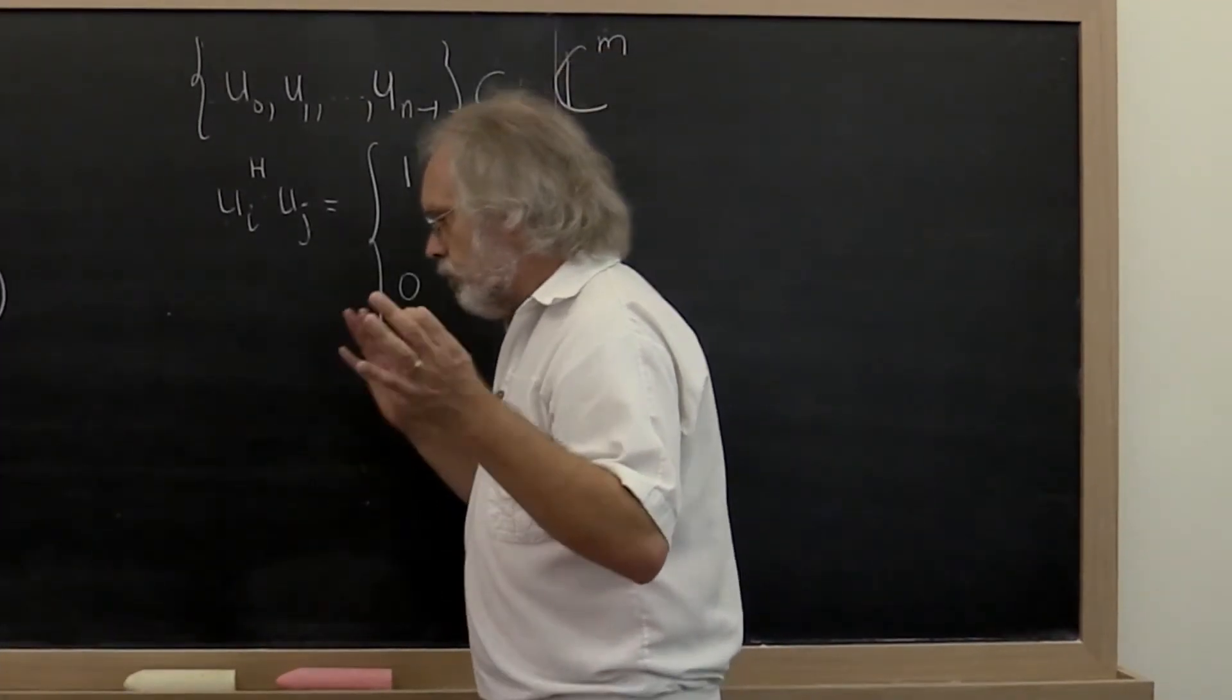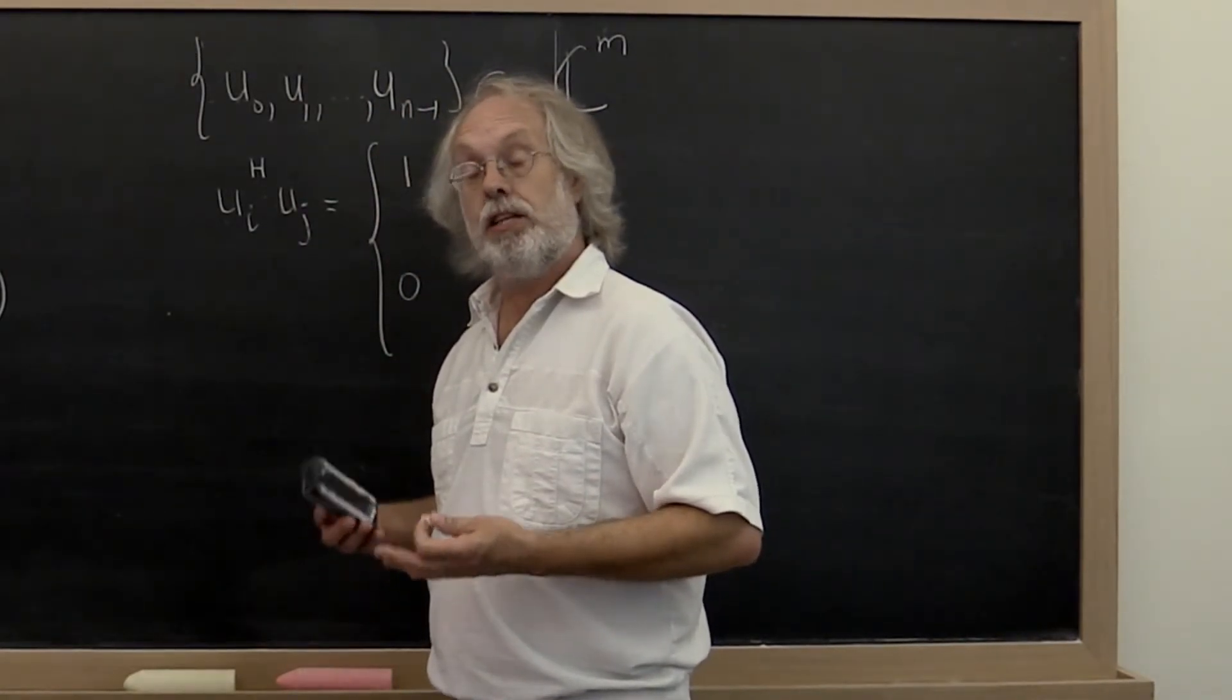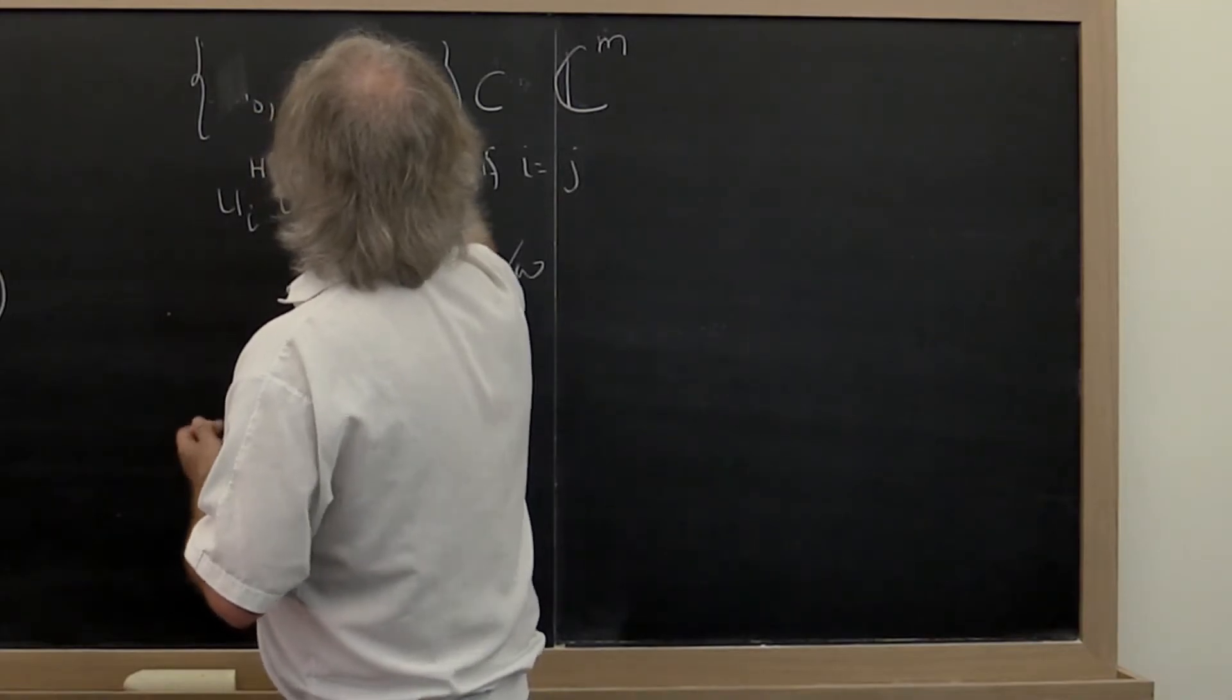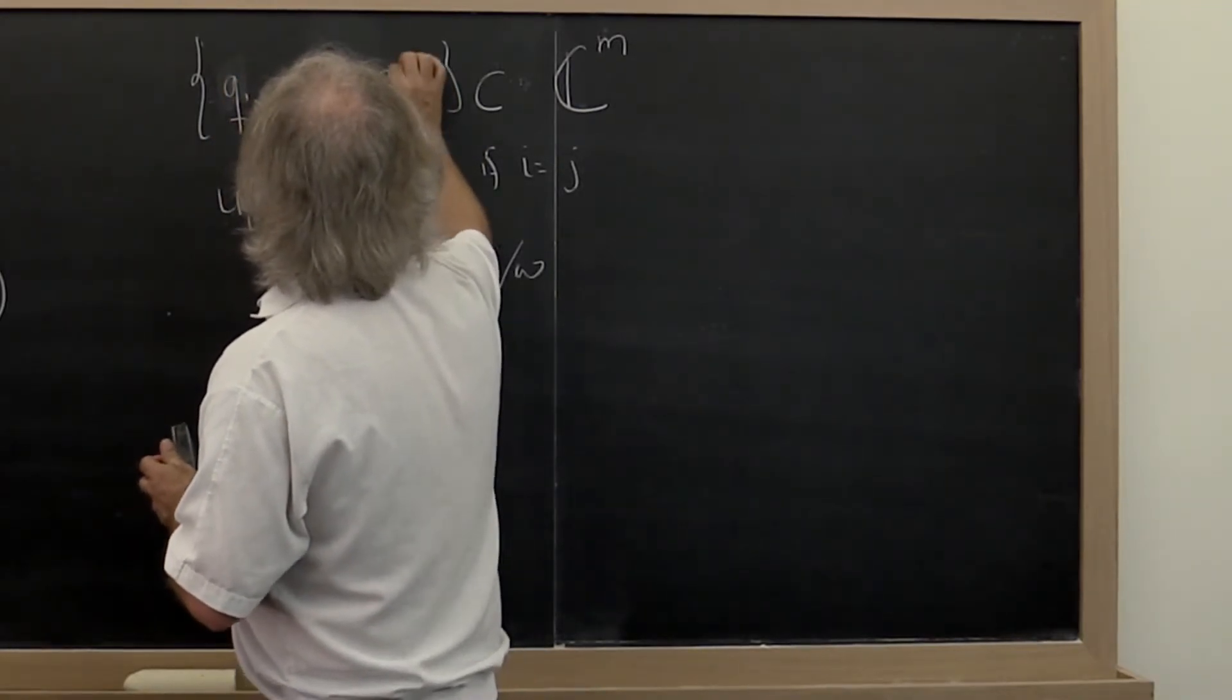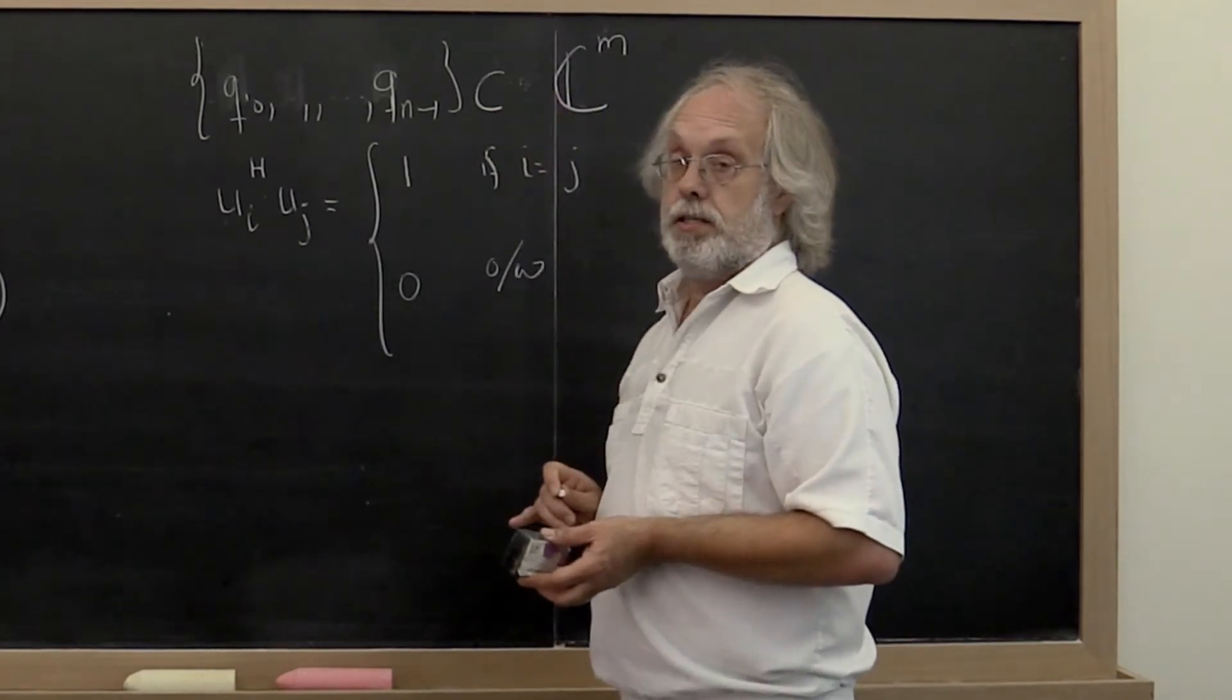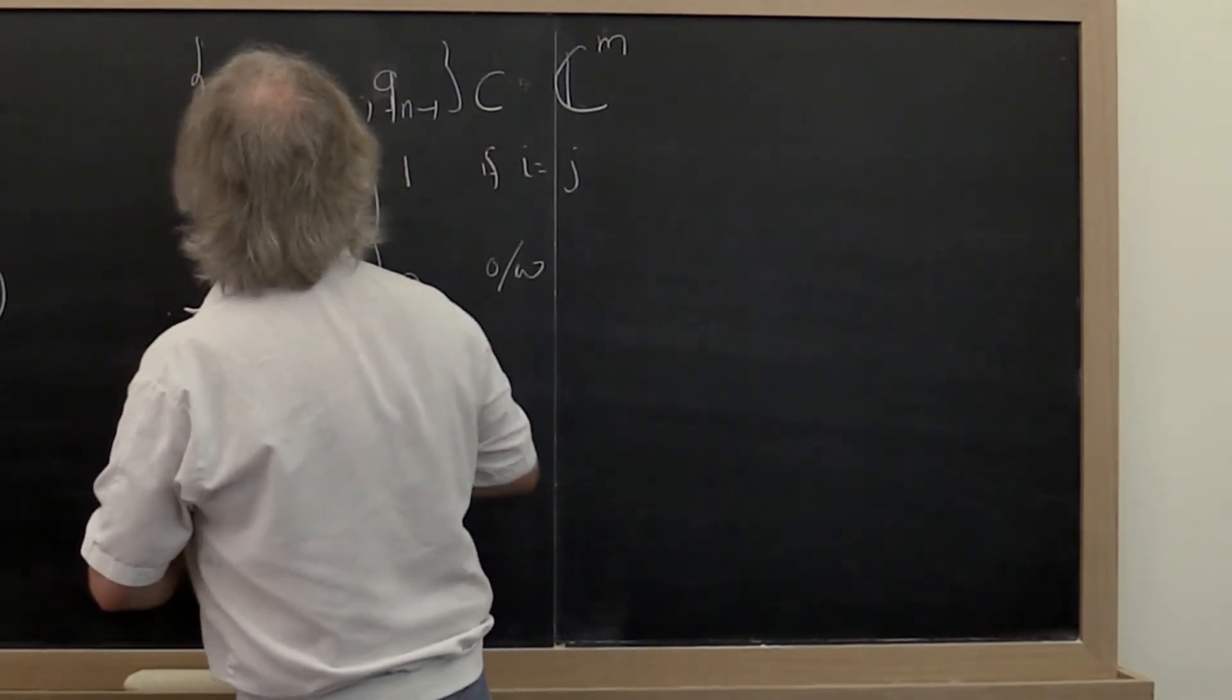Now, for historical reasons, when we start talking about such matrices, we tend to use the letter Q for the columns. So I'm going to change the U here to a Q and say we have n mutually orthonormal vectors Q0 through Q_{n-1}, all in C^m. And we know that they have this property right here.